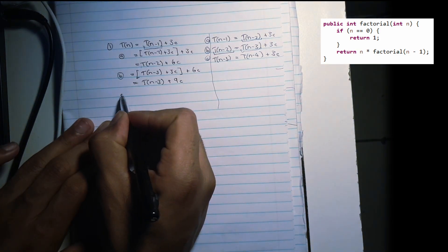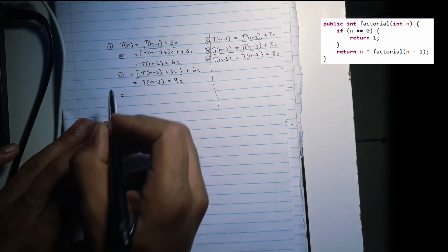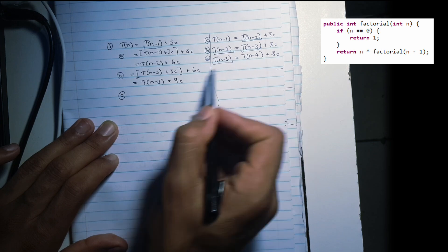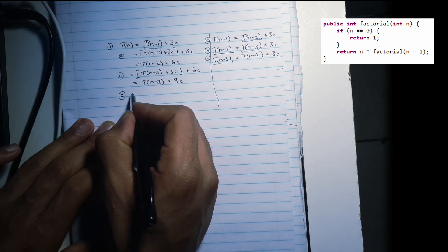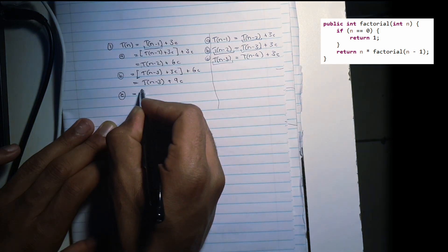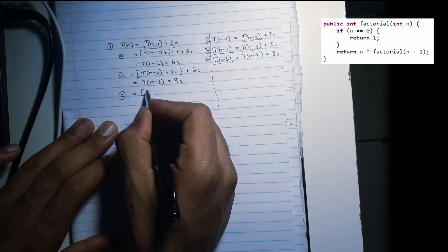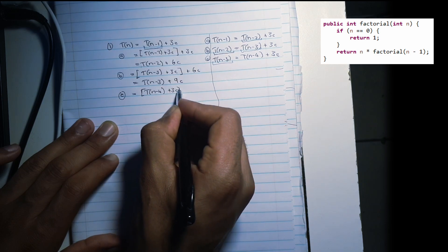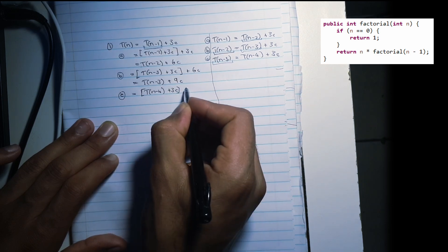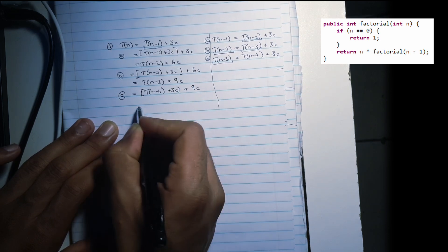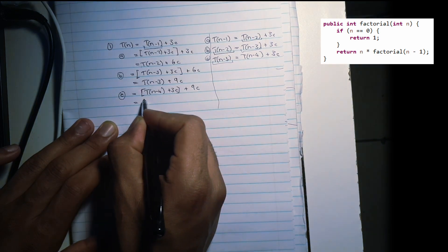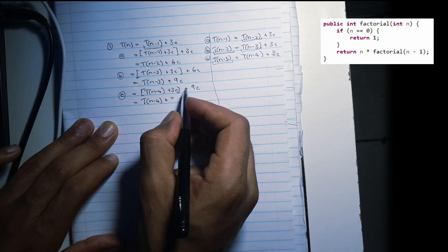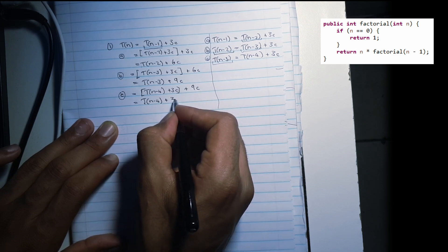Let's do our last substitution. We'll substitute the value of T of N minus three. We find T of N minus four plus 3C plus 9C. And then we simplify — it's going to be 12C, giving us T of N minus four plus 12C.